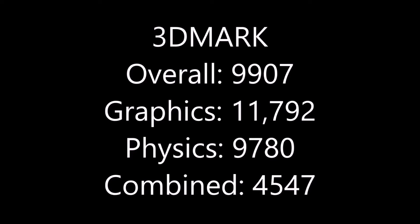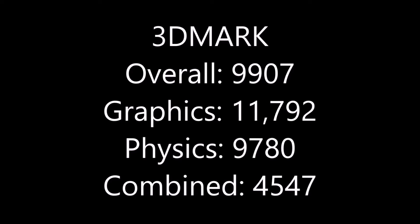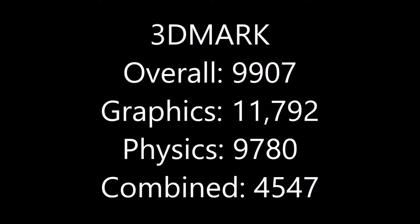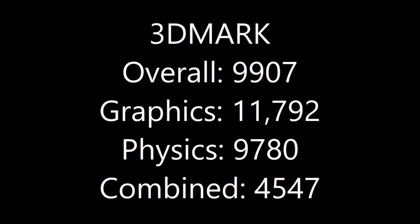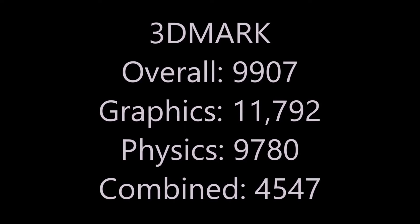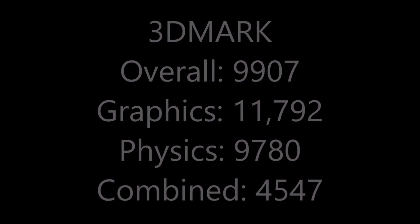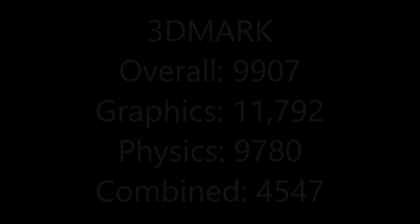The R9 290 was actually stock in this one — I didn't overclock it. As you can see, the R9 290 un-overclocked came extremely close to the 1060, within 100 to 200 points. If I had overclocked the R9 290 and run it on this as well, we could probably close that gap. Now let's look at our final test, 3DMark Time Spy.